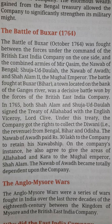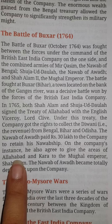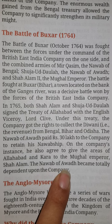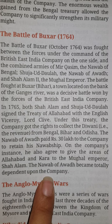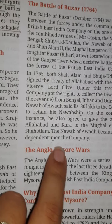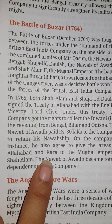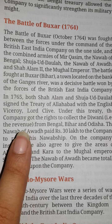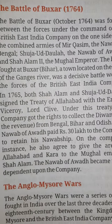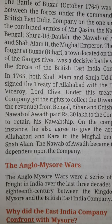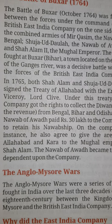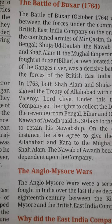On the company's insistence, the Nawab of Awadh also agreed to give the areas of Allahabad and Kara to the Mughal Emperor Shah Alam. The Nawab of Awadh became totally dependent upon the company, the British East India Company.